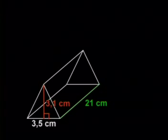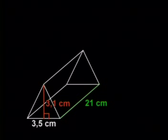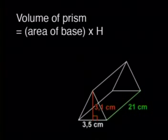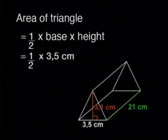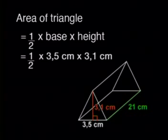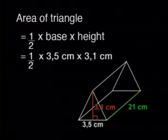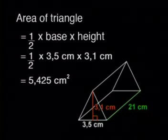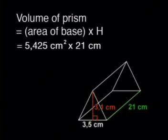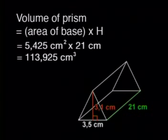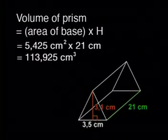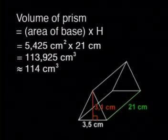Does this only work for right rectangular prisms? Let's look at another shape — a triangular prism. The formula for volume is area of base times height. To get the area of the base, I need to calculate half base times height on this triangle. The base is 3.5 centimeters and the perpendicular height is 3.1 centimeters, so I get half of 10.85, which is 5.425 centimeters squared. Multiplying by the height of the box — 21 centimeters — gives 113.925 cubic centimeters. Let's round this to 114 cubic centimeters.